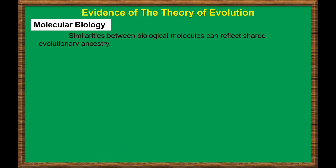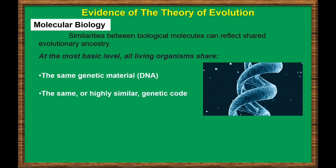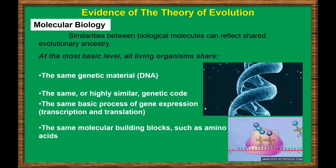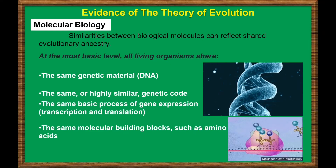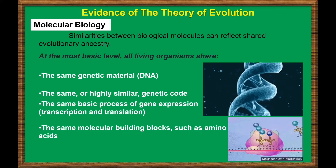Similarities between biological molecules can reflect shared evolutionary ancestry. All living organisms share certain fundamental features, and these shared features suggest that all living things are descended from a common ancestor that had DNA as its genetic material. Present-day organisms all share these features because they were inherited from the ancestor.